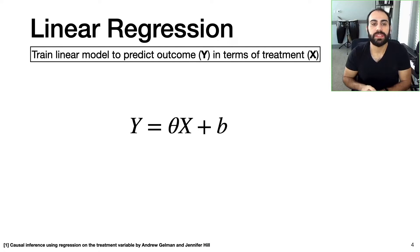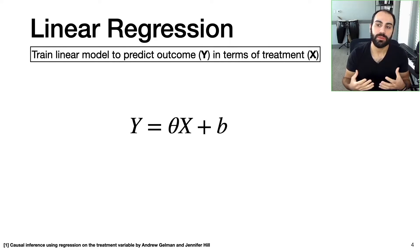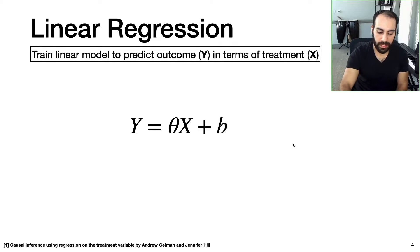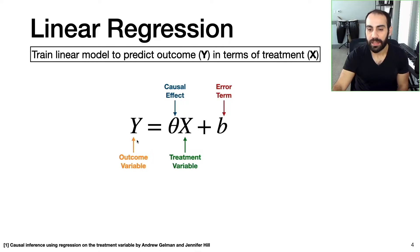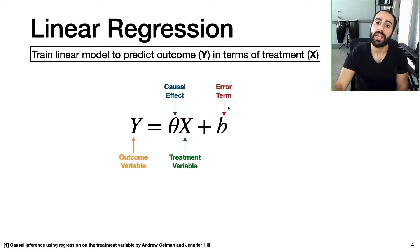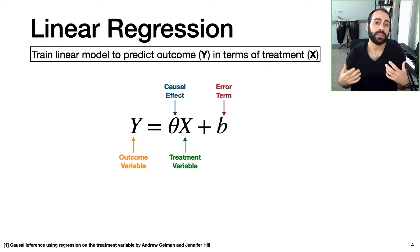For linear regression, here is where we train a linear model to predict the outcome variable y in terms of the treatment variable x. We have a linear model y equals theta x plus b. Y is our outcome variable and x is our treatment variable — x could be whether someone takes a pill or not, and y can be an outcome such as headache status. We interpret theta to be the causal effect of x on y, and b to be an error term.